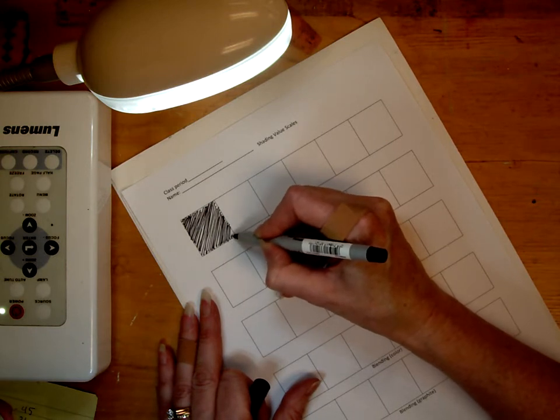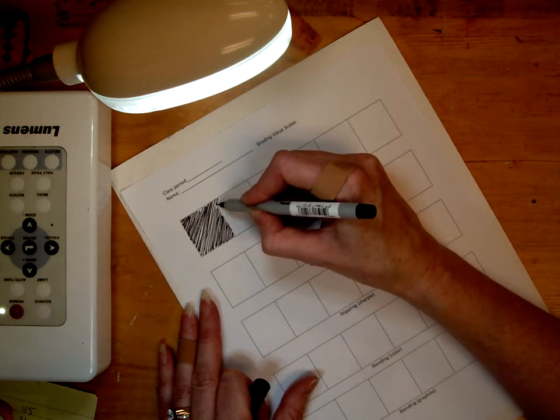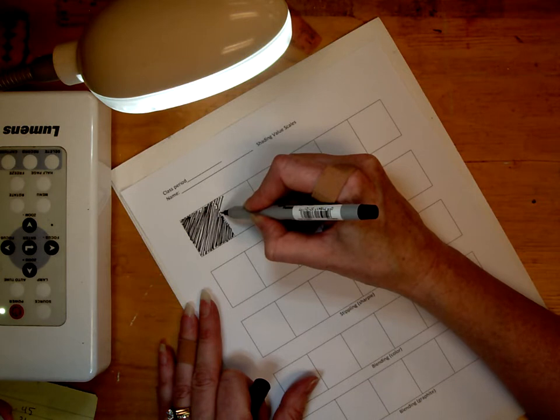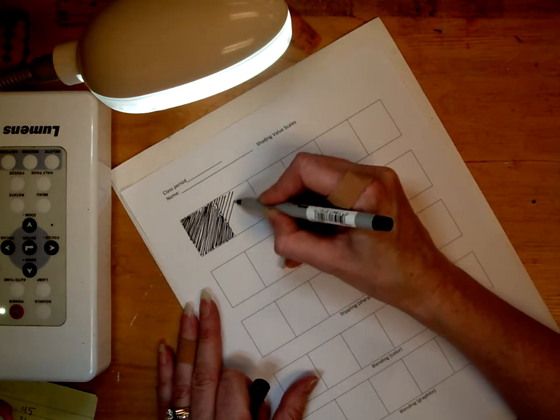Then we're going to move on to the next one which will have fewer lines and they'll be more spaced out. They're gradually going to have fewer and fewer and more space between each line.